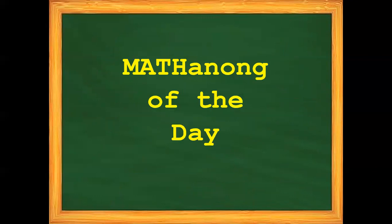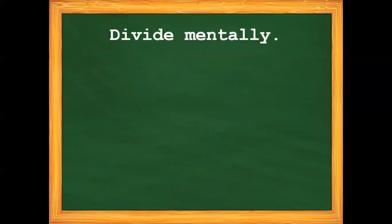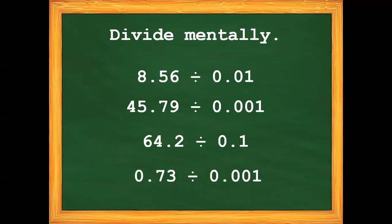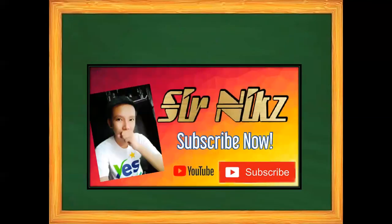And for our matanong of the day, divide mentally: Number 1 — 8-and-56-hundredths divided by 100. Number 2 — 45-and-79-hundredths divided by 1,000. Number 3 — 64-and-2-tenths divided by one-tenth. And number 4 — 73-hundredths divided by one-thousandth.